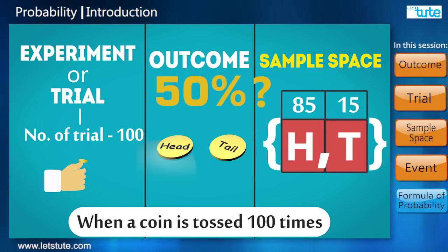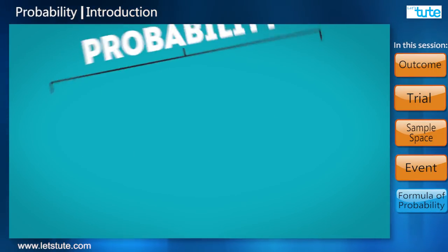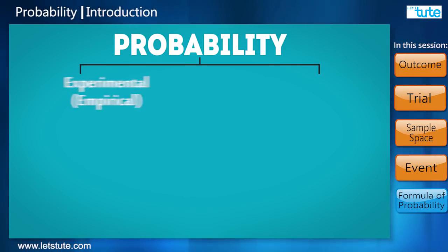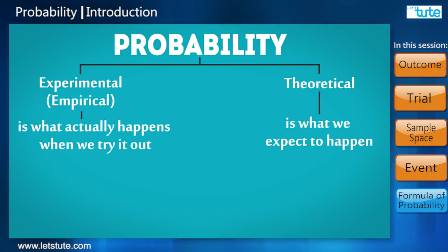So friends, basically there are two types of probability: experimental and theoretical. And for the same event, the answer can be different. So let's see an example and then we'll solve a question.